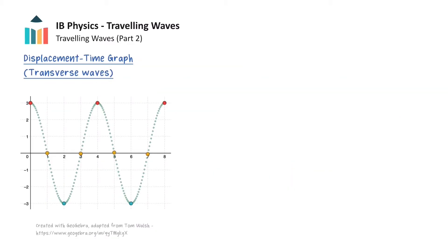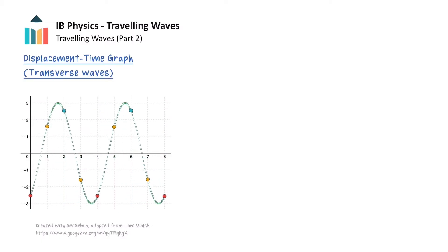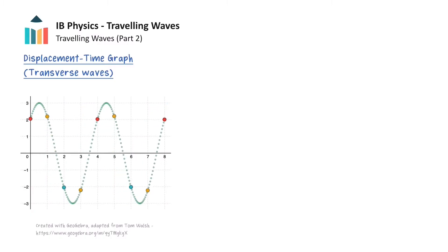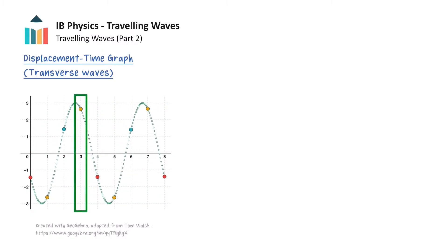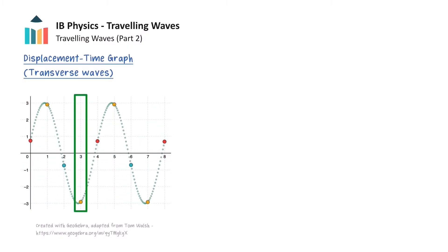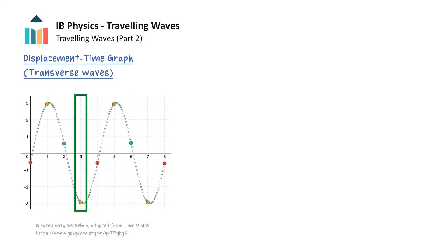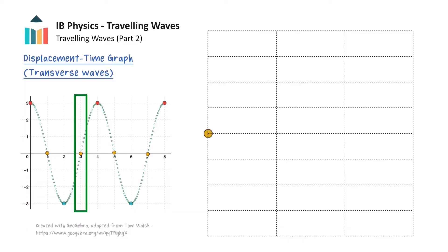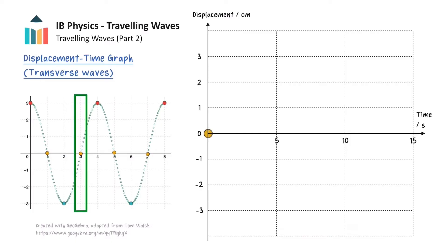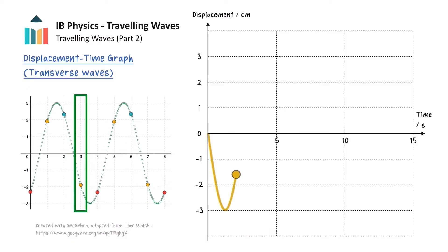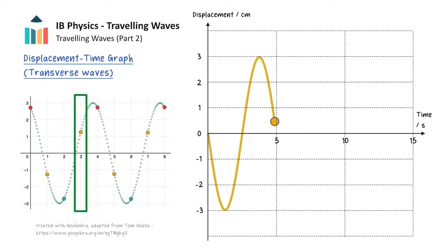Instead of holding the time constant, we will now hold the position in the medium constant, and look at how the displacement of a single point in the medium changes with time. We can imagine we are putting a screen in place so that we can only see a single point. Rather than watching how the whole wave moves through our medium, we can just look at the motion of this yellow particle as it oscillates in the medium. We will now create a graph of displacement against time for this yellow particle. So our x-axis on the graph will be time, and the y-axis will represent the displacement of that single particle at a particular time, where we will choose displacements that are upwards to be positive. This animation will now draw out the displacement time graph. The particle begins by moving downwards, starts moving back upwards, and then moves downwards again, and the motion repeats.